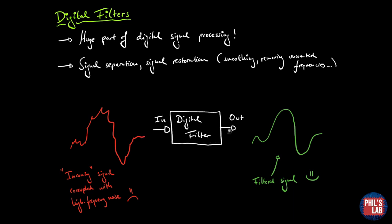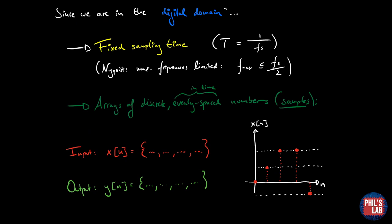On the input side we have this incoming signal corrupted with for example high frequency noise. You can see these squiggles over here. Now if we pass this through a digital filter which we've designed correctly we might get something like this on the output. The underlying trend of the signal is still there but we have removed the majority of this high frequency noise.